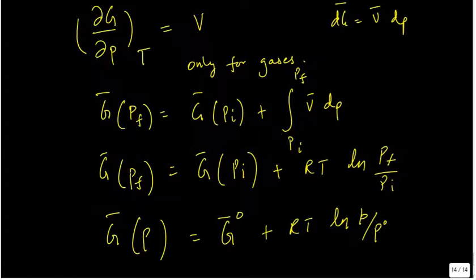It is taken as one bar, so people would happily omit this. And then to confuse you even further, you know this is related RT natural log P is related to the equilibrium constant.